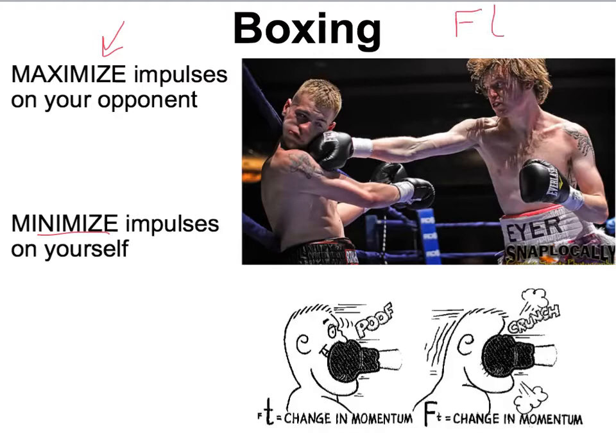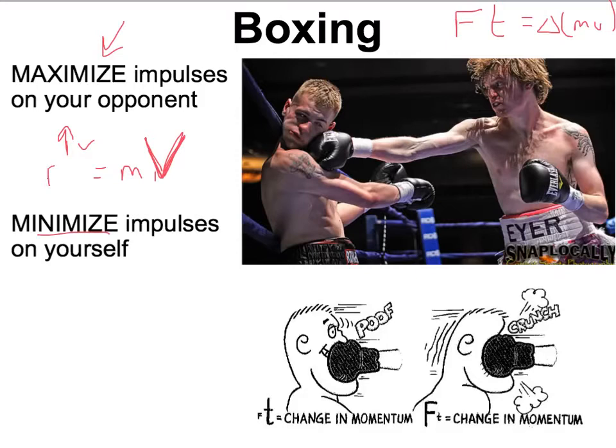Remember, an impulse is a change in momentum. So you could rewrite the impulse formula as a change in mass times velocity. How do you maximize the impulses on your opponent? What you do is throw punches with a very high velocity. If you increase velocity, you're going to have big impulses — that's how you maximize those impulses on your opponent.